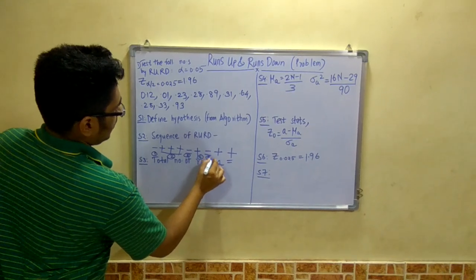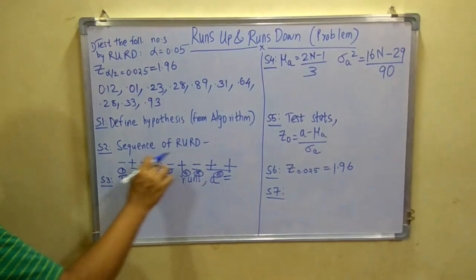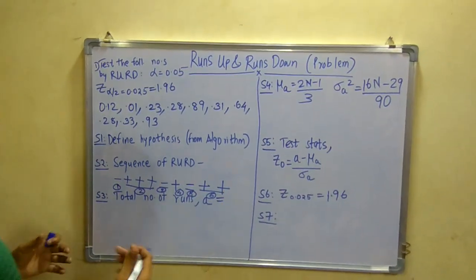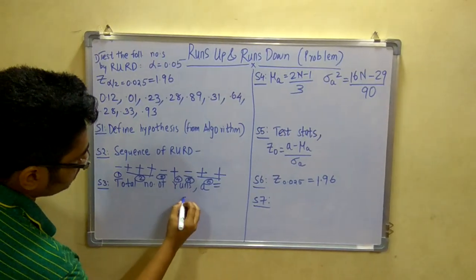This is 4. This is 5. And this is 6. So see, the repetitive signs must be counted or taken as 1. So you will get the number of runs as 6, that is a equals 6.